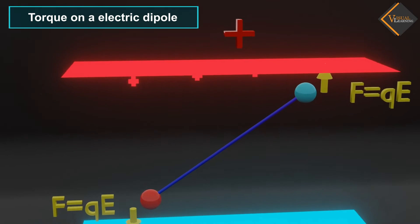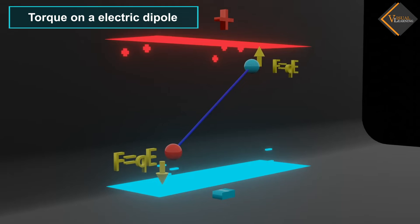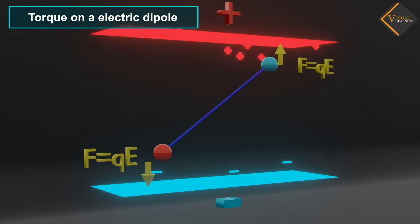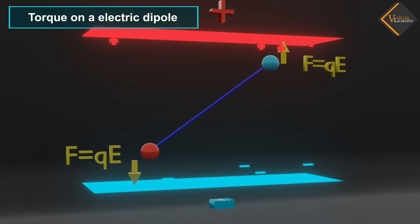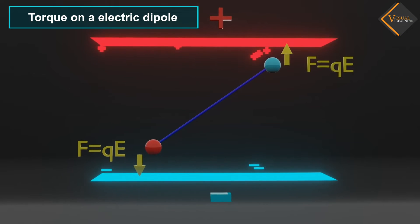Torque measures the rotation of an object. When you place an electric dipole in an electric field, it experiences torque. Due to this torque, the dipole aligns itself in a particular direction.